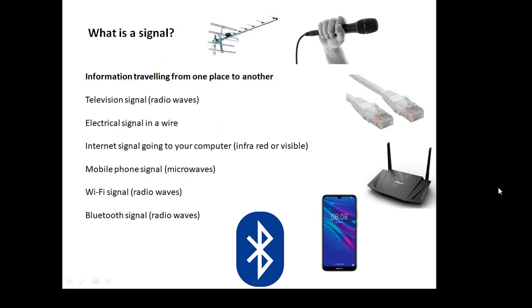So first of all, what is a signal? A signal is basically information traveling from one place to another. It could be a television signal which uses radio waves, an electrical signal in a wire, an internet signal going to your computer through an ethernet cable (that might be infrared or visible through a fiber optic cable), a mobile phone signal which uses microwaves, a wifi signal which uses radio waves, or a Bluetooth signal. Information traveling from one place to another is a signal.